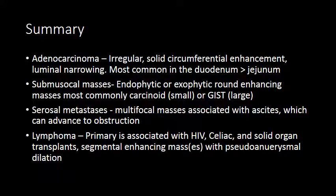In summary, adenocarcinoma tends to be an irregular, solid, circumferential enhancing mass that causes luminal narrowing, most frequently seen in the duodenum and then the jejunum. Submucosal masses are typically endophytic or exophytic round enhancing masses; the most common etiologies are carcinoid tumor, which tends to be smaller, or gastrointestinal stromal tumors, which tend to be larger. Serosal metastases most commonly arise from metastatic adenocarcinomas and appear as multifocal masses or nodules with associated ascites. Lymphoma, when primary, is associated with HIV, celiac disease, or solid organ transplants, and tends to be a short to intermediate segment enhancing mass with pseudoaneurysmal dilation.